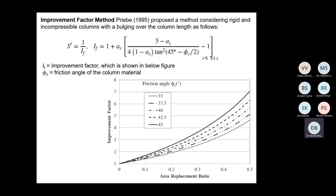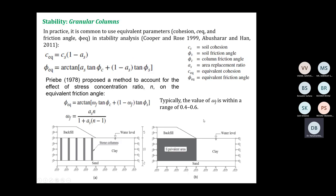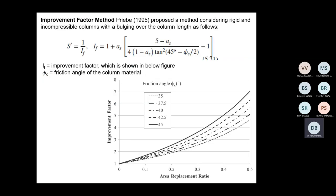The improvement factor method defines: S' = 1/Im (improvement factor), where Im is related to area replacement ratio As and friction angle of the aggregate material. Three defined graphs can be used to calculate the final settlement S'. This graph will be provided in the exam. The stability part will not be covered. In summary, this is all about stone columns — the bearing capacity covered here and the settlement calculation are now both complete.